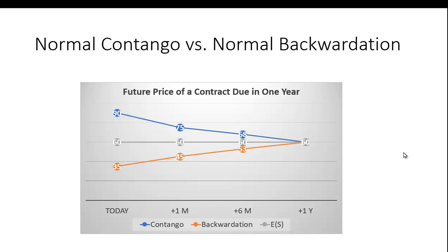This isn't really a complicated topic — it's just some terminology that gets commonly used when talking about futures contracts. But you want to be a little careful about whether you're using the term normal contango or just contango, or normal backwardation or simply backwardation.